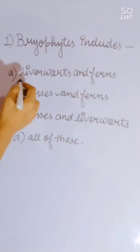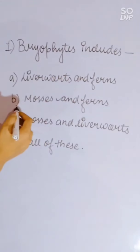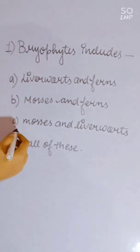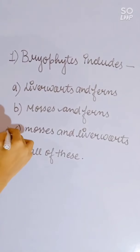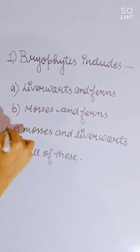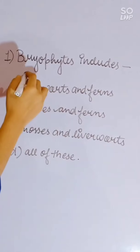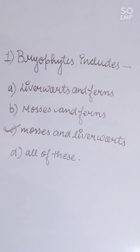Bryophytes include: liverworts and ferns; mosses and ferns; mosses and liverworts; or all of these. Mosses and liverworts belong to the bryophyte kingdom. Correct answer is mosses and liverworts.